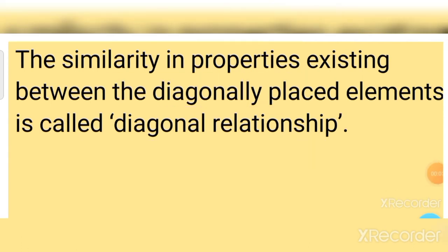The similarity in properties existing between the diagonally placed elements is called diagonal relationship. The diagonal pairs are: Lithium–Magnesium, Beryllium–Aluminium, and Boron–Silicon. These elements share similar characters and are placed in diagonal positions.